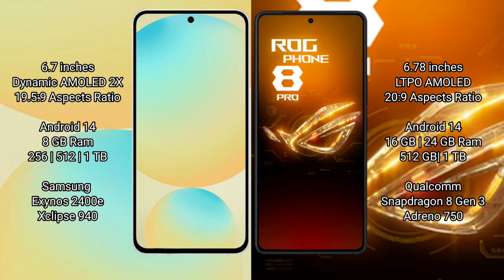Samsung Galaxy S24 FE runs on the Android 14 operating system. ASUS ROG Phone 8 Pro also runs on the Android 14 operating system. Samsung Galaxy S24 FE comes with 8GB RAM and 128GB, 256GB, or 512GB internal storage options.